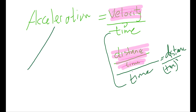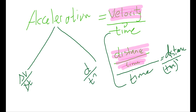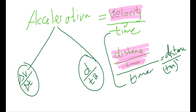The acceleration now has two formulas. You can say it is delta v over delta t, or you can say it is distance over t squared. If you are given the initial velocity, final velocity, and change in time, use the first formula. If you are given the distance and the time, use the second formula.